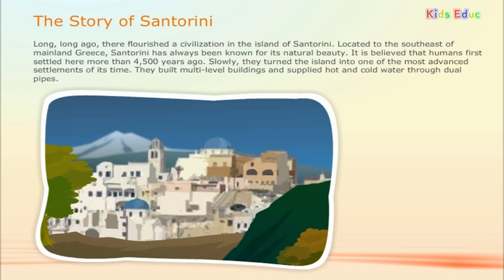Long, long ago, there flourished a civilization on the island of Santorini. Located to the southeast of mainland Greece, Santorini has always been known for its natural beauty. It is believed that humans first settled here more than 4,500 years ago. Slowly, they turned the island into one of the most advanced settlements of its time, building multi-level buildings and supplying hot and cold water through dual pipes.